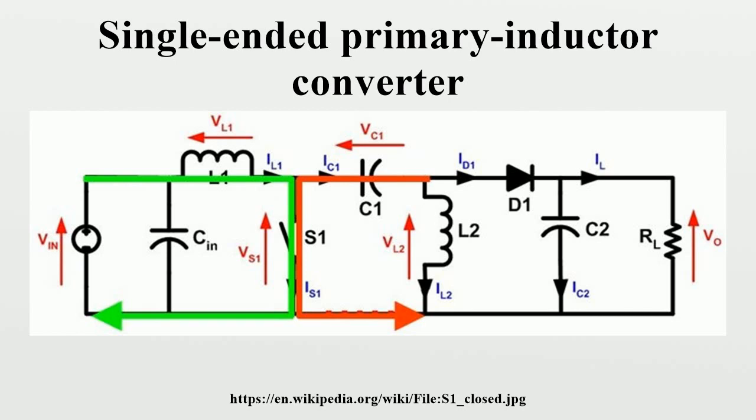making inductor L2 the only source of DC load current. Therefore, the average current through inductor L2 is the same as the average load current and hence independent of the input voltage.